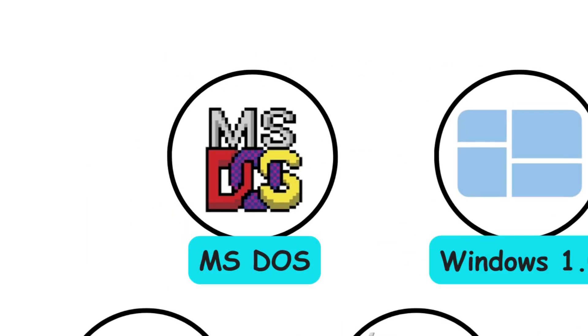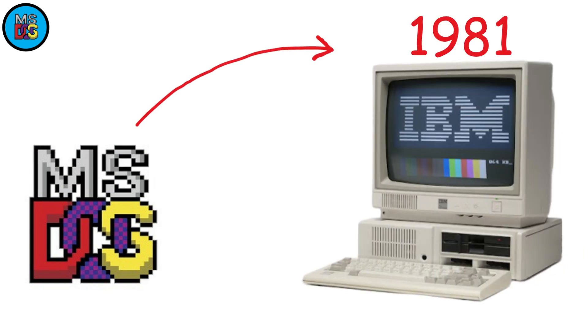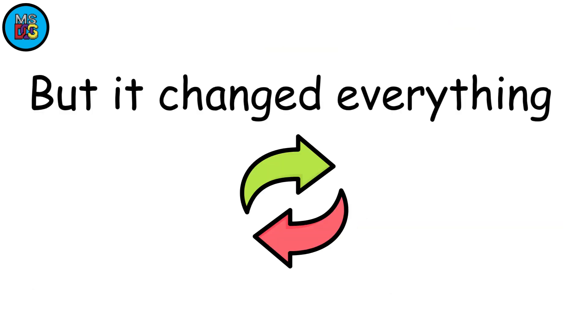MS-DOS, 1981. Let's start at the very beginning, with MS-DOS. Hitting the market in 1981, this Microsoft disk operating system wasn't much to look at — just a black screen with blinking text. But it changed everything.